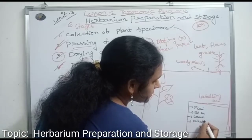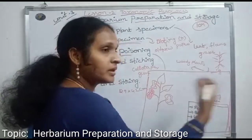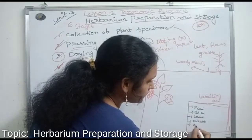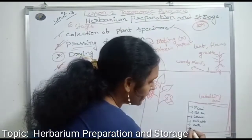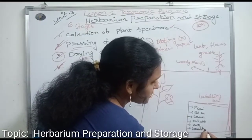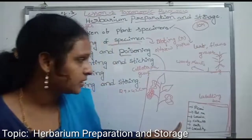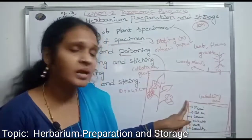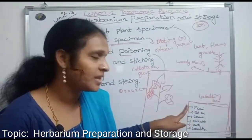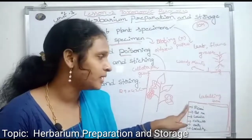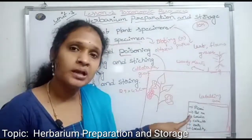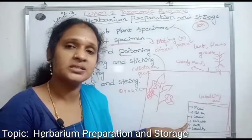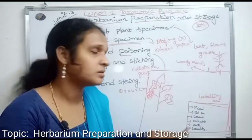The labeling box also includes: the collector's name — who collected the specimen; the date of collection; and the locality — meaning the place where the specimen was collected. The labeling box size is 4.5 x 7.5 cm and appears on the right corner of the herbarium sheet, providing all data about the collected specimens.